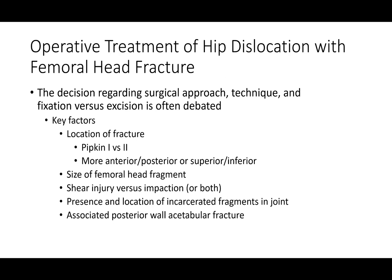Key factors include location of the fracture — like Pipkin 1 versus Pipkin 2, whether it's more anterior, posterior, inferior, or superior — and the size of the piece. Is it a shear injury? Is there impaction? Is there both? Are there fragments blocking reduction? Is there a posterior wall fracture? These things all play a role in decision-making.